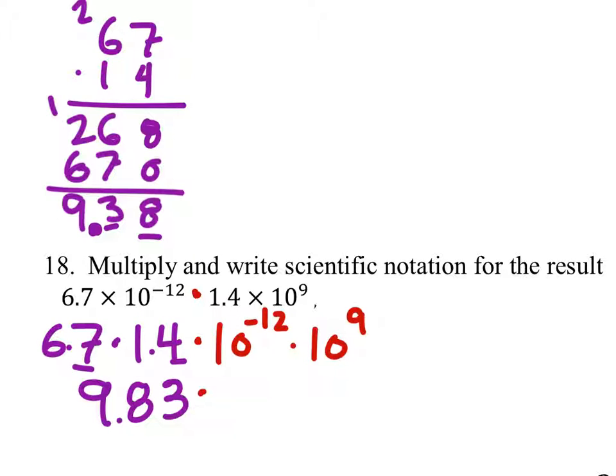9.83 times, let's look at the 10 powers. This is 10 to the power of negative 12 times 10 to the power of 9. So what are we going to do with those exponents?